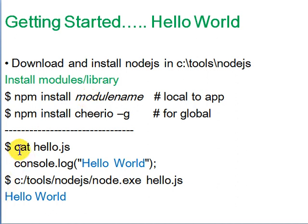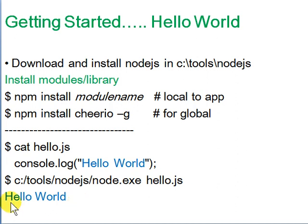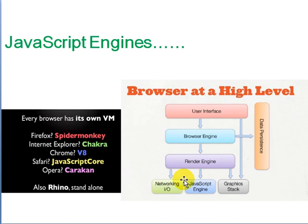The simplest Node.js example is hello.js — just use console.log, and it also works in Chrome. To run it, type 'node hello.js' and it prints to the console. That's the simplest hello-world program you can start with.